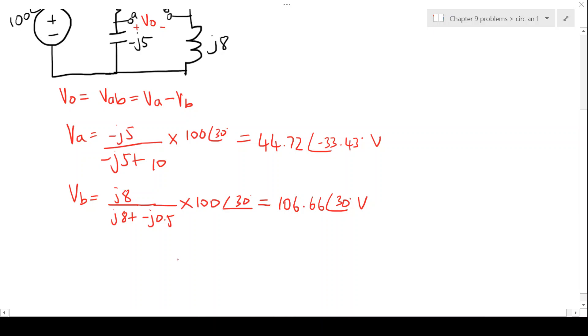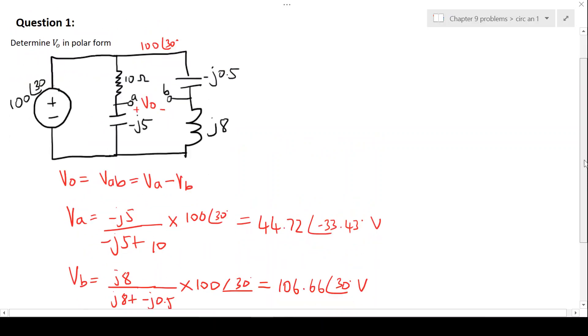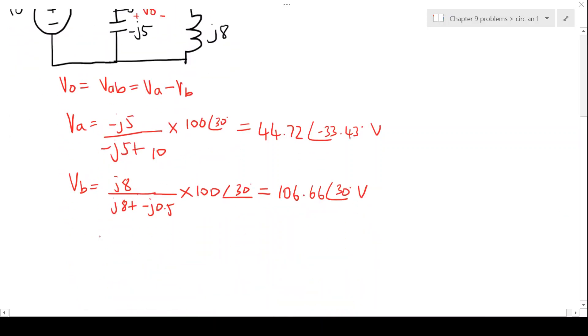All right, and then we determine now the voltage VAB, which is V0. So V0 is going to give you VA minus VB, which is equal to 44.72 angle negative 33.43 minus 106.66 angle 30 degrees.